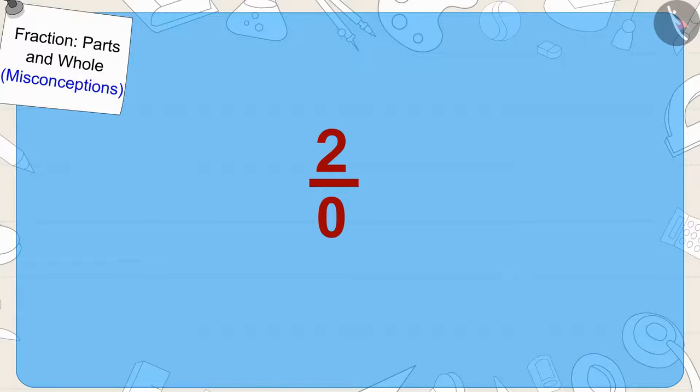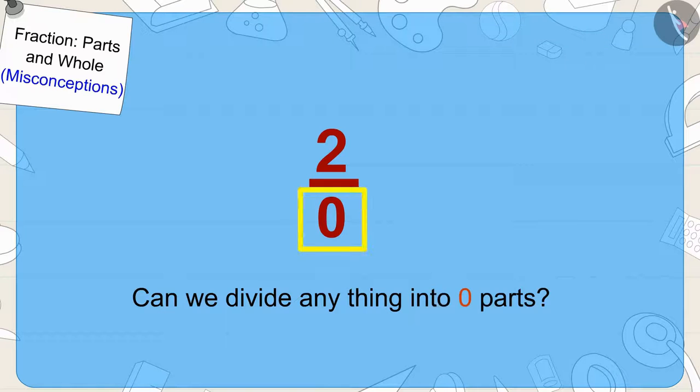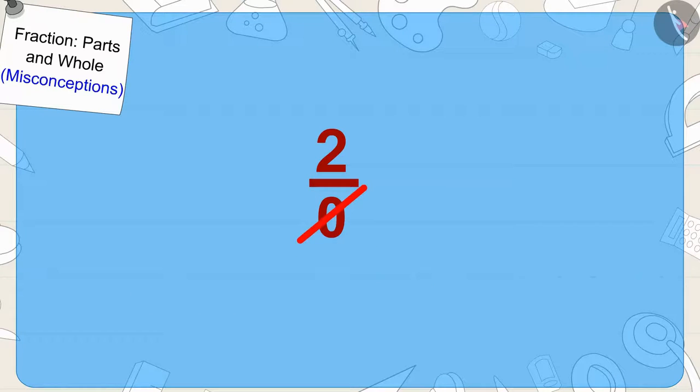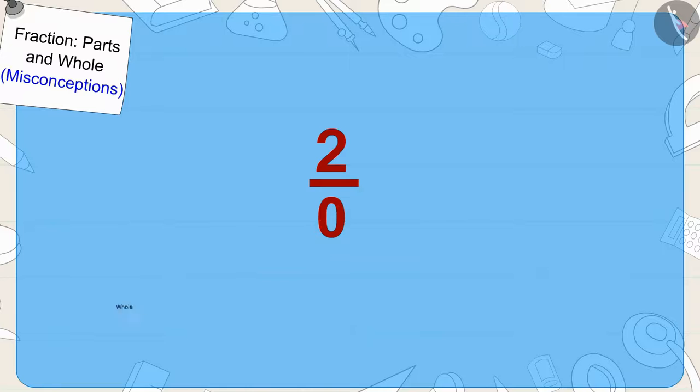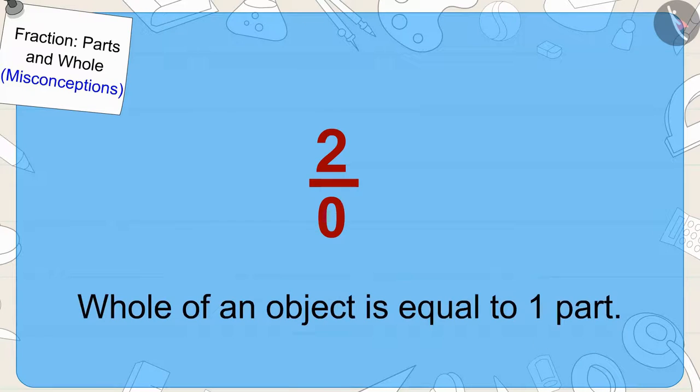Children, can we divide anything into zero parts? No. If there is an object, it will have at least one part. Because the whole of an object is equal to one part.